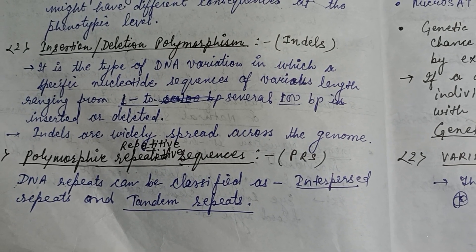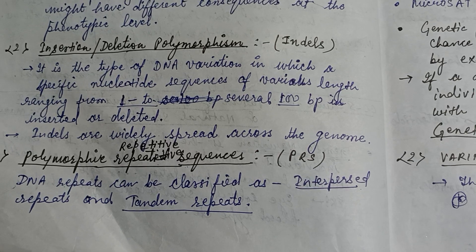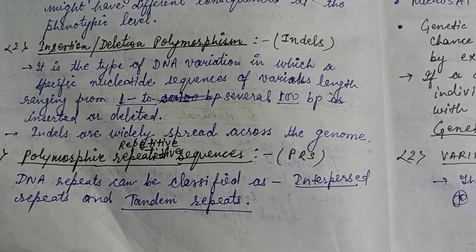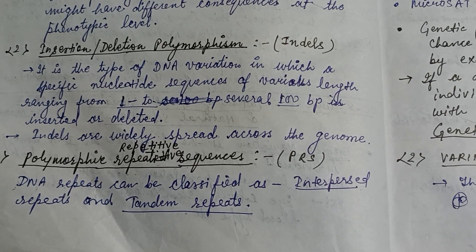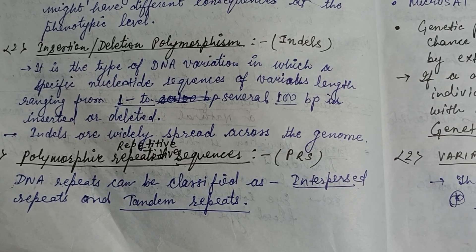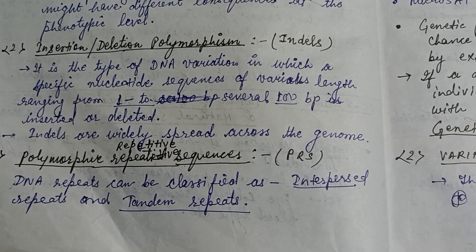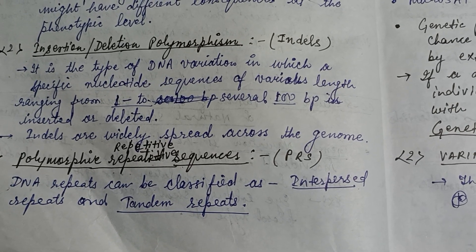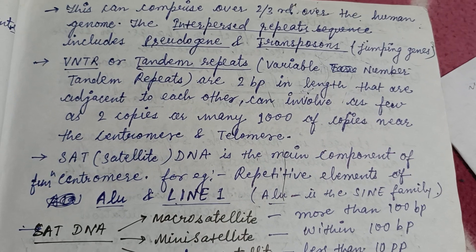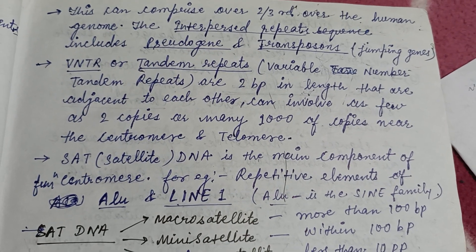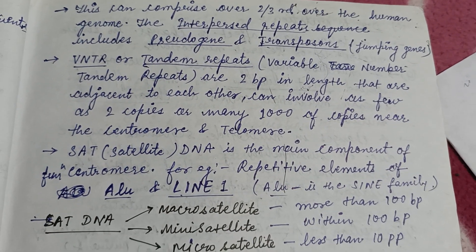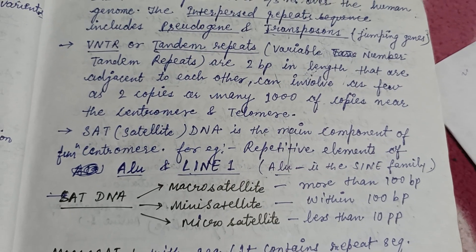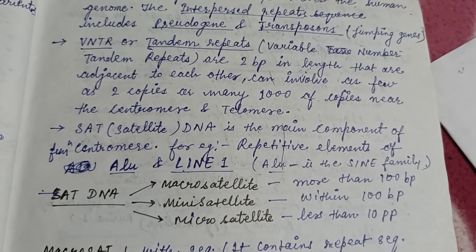The third type is polymorphic repeated sequences, which include interposed repeats and tandem repeats. Interposed repeats are repetitions of nucleotides within the gene sequence or between whole gene sequences, while tandem repeats generally occur at the terminal region of the sequence. Interposed repeats include pseudogenes and transposons (also known as jumping genes), while VNTR and STR are examples of tandem repeats.